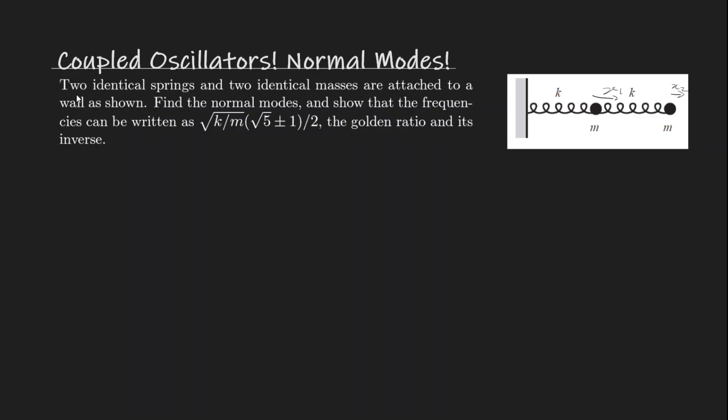The problem is: two identical springs and two identical masses are attached to a wall as shown. Find the normal modes and show that the frequencies can be written as root k over m times root 5 plus or minus 1 divided by 2, the golden ratio and its inverse.